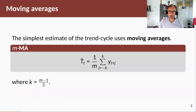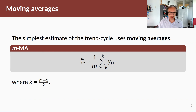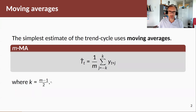An m-component or m-order moving average is represented by this formula. Basically we get an estimate of the trend, and that estimate is obtained by averaging values of the time series within k periods of t, where k is equal to (m minus 1) divided by 2.